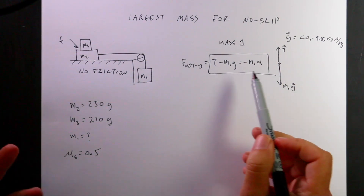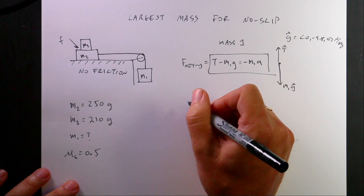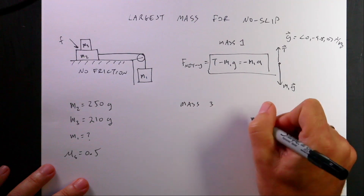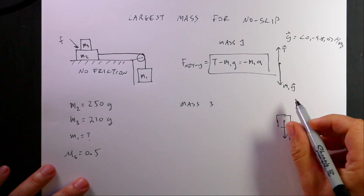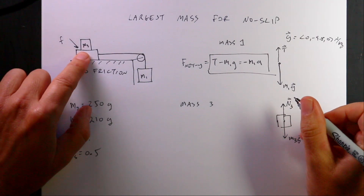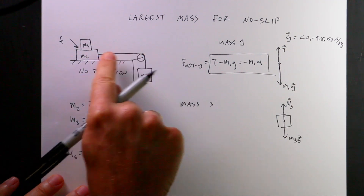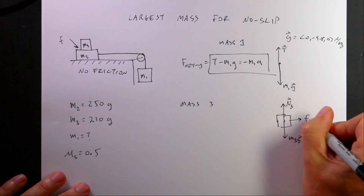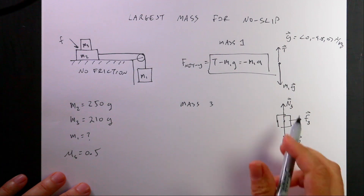I don't know T, I don't know a, and I don't know M1, so that equation alone doesn't help much. Let's move on to mass 3. Here's mass 3. I draw the block and it has a downward gravitational force M3g, an upward normal force N3 from the block below it, and since this system is accelerating horizontally, there's a frictional force F3 pushing mass 3 in the direction of acceleration.